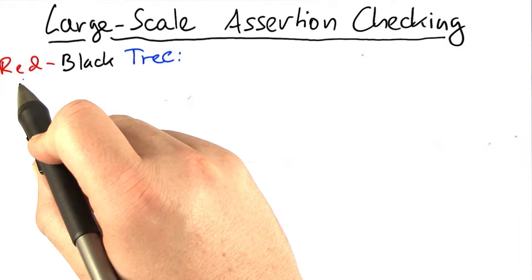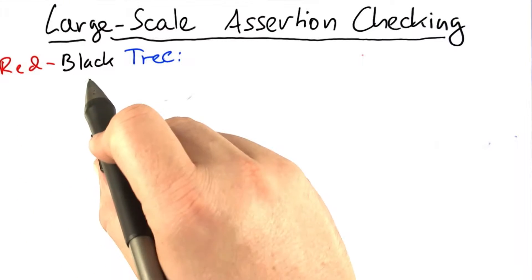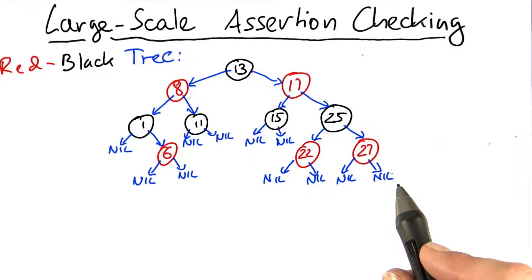Let me illustrate this with one of the most devilish data structures ever invented, which is a red-black tree. Here's an example of a red-black tree. A red-black tree is a data structure to represent associative arrays, also known as mappings.